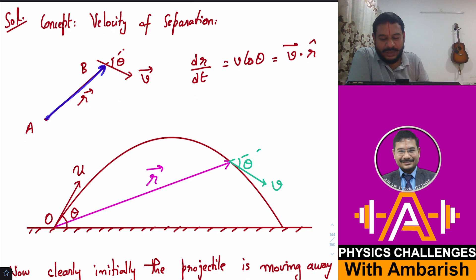We can say that dr/dt is simply v cos θ, which can also be written as v⃗·r̂ because r̂ is the unit vector along this direction. When you take the dot product with unit vector, you just get the component of the vector. The same thing we can think of in projectile motion also.